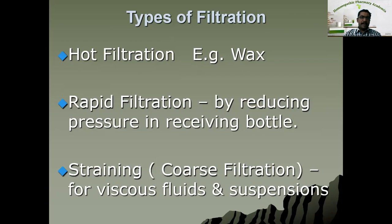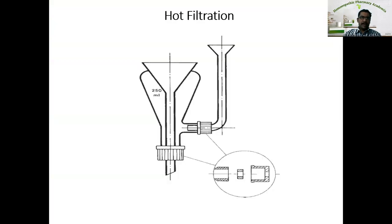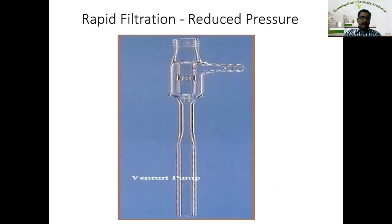Straining is a process usually employed for filtration of mother tinctures. Straining is otherwise known as coarse filtration for viscous fluids and suspensions. It is usually done with a muslin cloth or cotton cloth. The nature of liquid used for straining is more of a viscous liquid or suspension. Hot filtration involves heating the substance until it becomes liquid and then filtering it. Rapid filtration uses a vacuum pump — a venturi pump — attached with the receiving bottle.